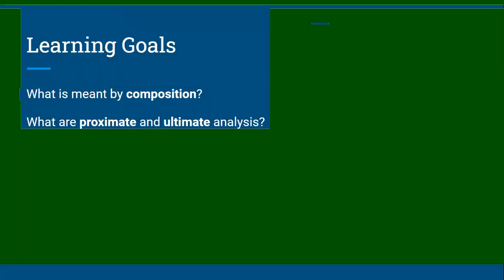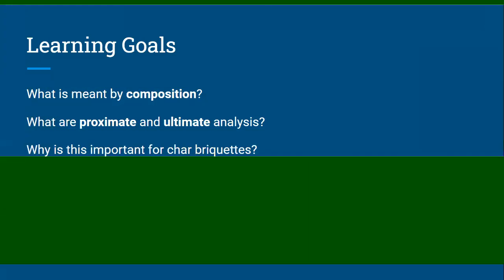The learning goals here are: we will hopefully answer what is meant by composition when we talk about fuel, biomass composition, or even your briquette composition. We'll cover what proximate and ultimate analyses are — there are two types of analysis we're going to introduce, although there are a few others people use. We'll talk most about proximate analysis, a little bit less about ultimate, and why this is important for char briquettes.